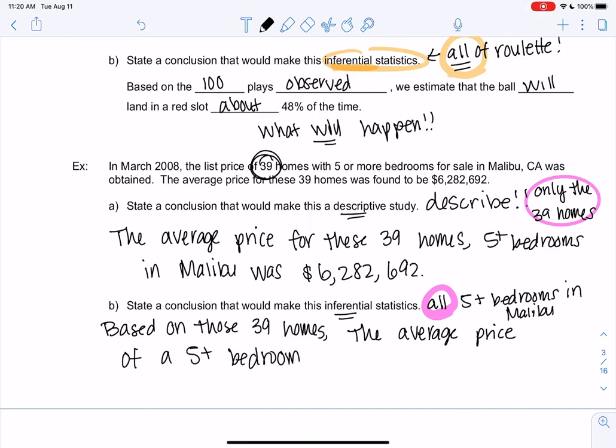Notice I'm talking about all five-plus bedrooms in Malibu now, is about $6,282,692. And that's it. We made it through our first video.